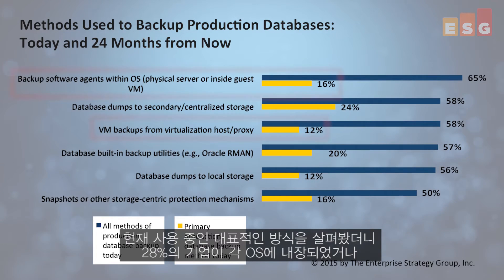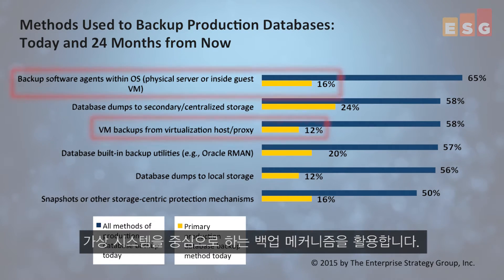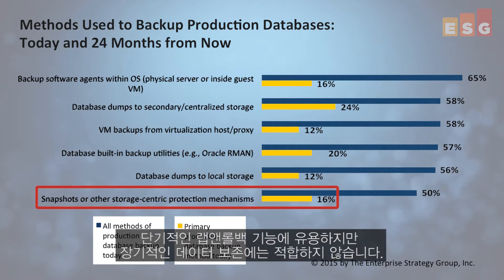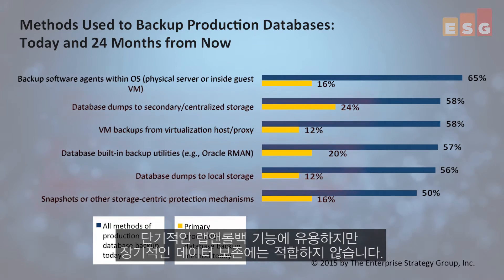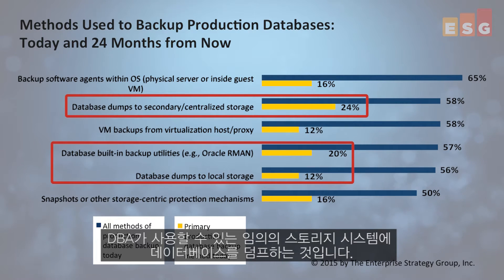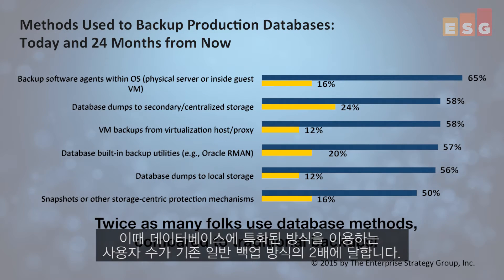When we look at the primary methods in use today, 28% of organizations leverage backup mechanisms, either within each OS or within virtual machine-centric backups. 16% use storage-based snapshots, which are typically good for rapid rollback in the short term but not for longer-term data retention. 56% utilize database-specific mechanisms, dumping their databases to whichever storage systems are available to the DBA — that's twice as many folks using database methods compared to traditional backups.